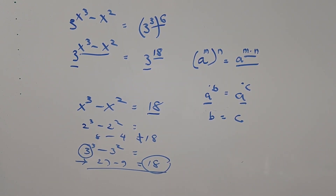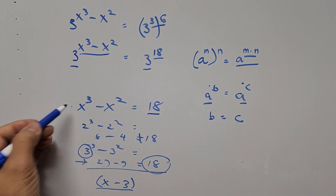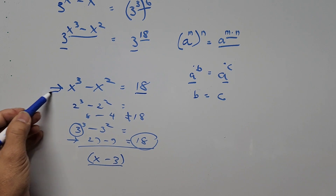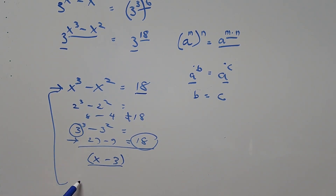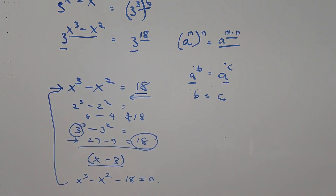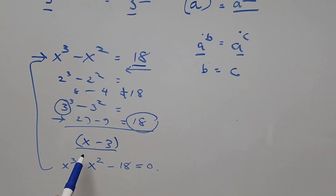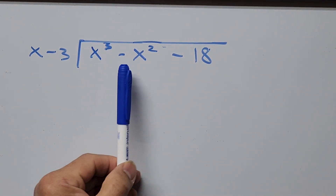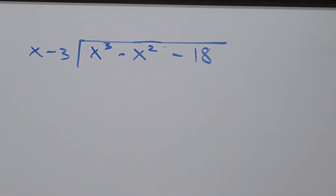To find the other two roots, we factor out (x minus 3) from the original equation. First, we put the equation in standard form: x cubed minus x squared minus 18 equals 0. Then we divide the whole expression by the factor (x minus 3) using long division.